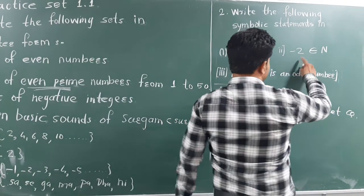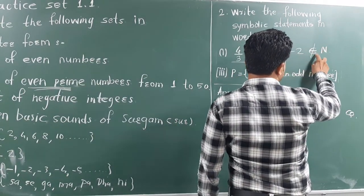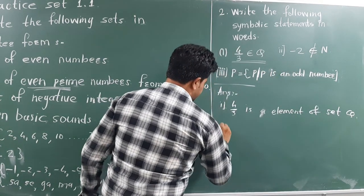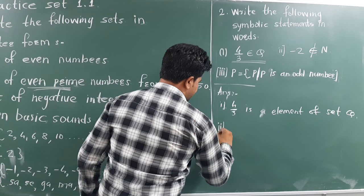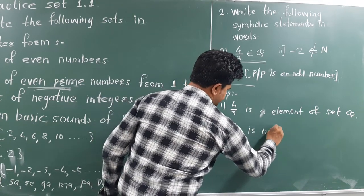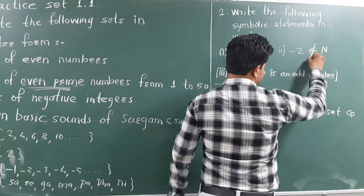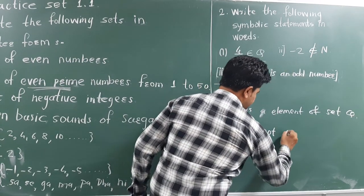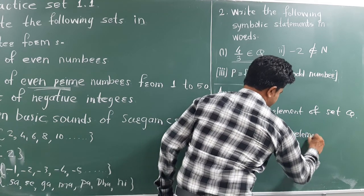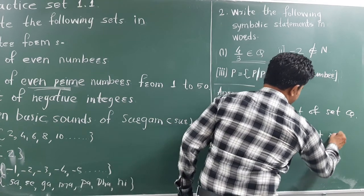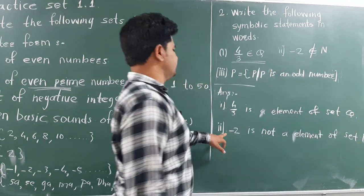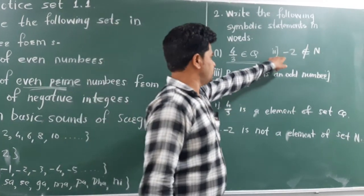Now, second, minus 2 we have given. Minus 2 is not. We have given the line here. Second statement in word form: minus 2 is not, because of this line, minus 2 is not an element of set N. And this is second word statement of this symbolic form.